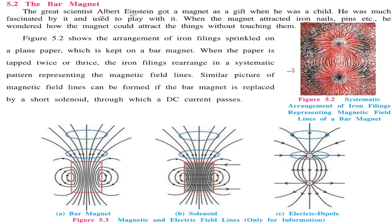A similar picture of magnetic field can be formed if a bar magnet is replaced by a short solenoid through which DC current passes. This is a bar magnet. We are discussing the same for the solenoid, and this is an electric dipole. These are the magnetic and electric lines.